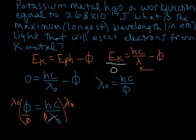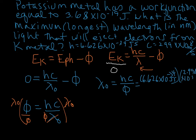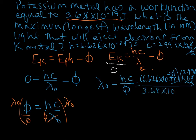So let's plug everything in. Remember, h is Planck's constant: 6.626 times 10 to the negative 34 joule-seconds. And c is the speed of light: 2.998 times 10 to the eighth meters per second. So plugging those in: 6.626 times 10 to the negative 34 joule-seconds, multiplied by 2.998 times 10 to the eighth meters per second, over the work function — which from our problem is 3.68 times 10 to the negative 19 joules.